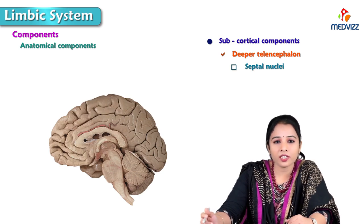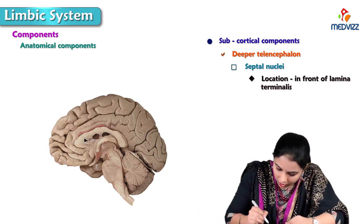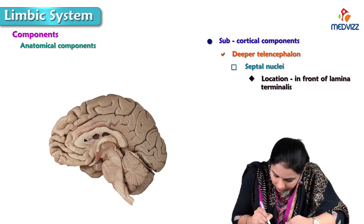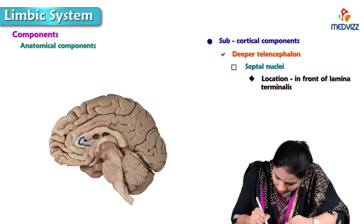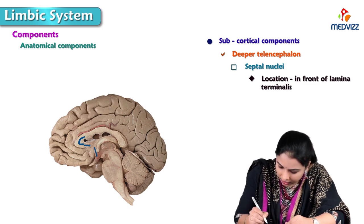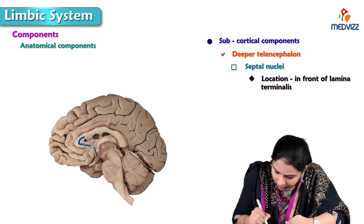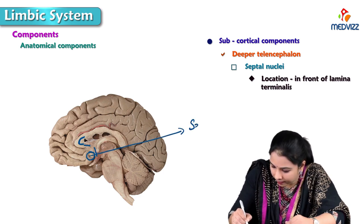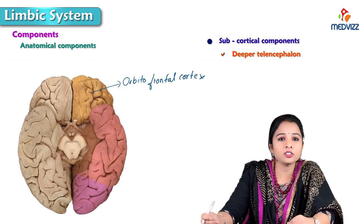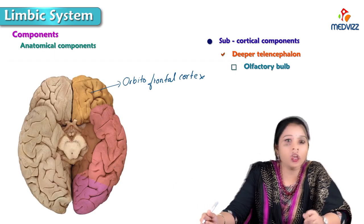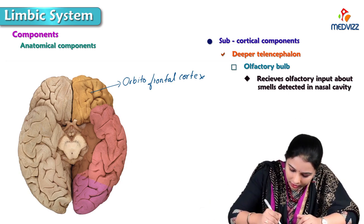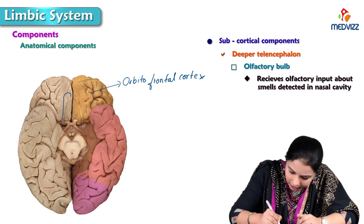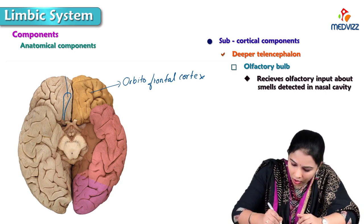Here is the lamina terminalis, the genu and rostrum of the corpus callosum. This thin thread-like structure forming the anterior boundary of the third ventricle is the lamina terminalis, and the septal area is in front of it. The next subcortical component is the olfactory bulb, which receives olfactory input about smells detected in the nasal cavity. Here we can see the olfactory tract ending in a widened structure — the olfactory bulb.